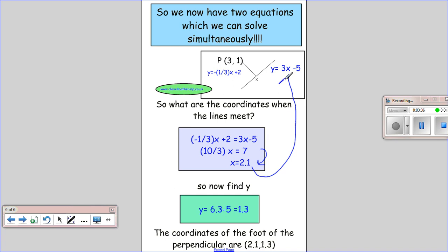This one looks slightly friendlier, so I'm going to put it in there: 3×2.1=6.3, minus 5 gives me y=1.3. So we've found the coordinates of the foot of the perpendicular which are at (2.1, 1.3).